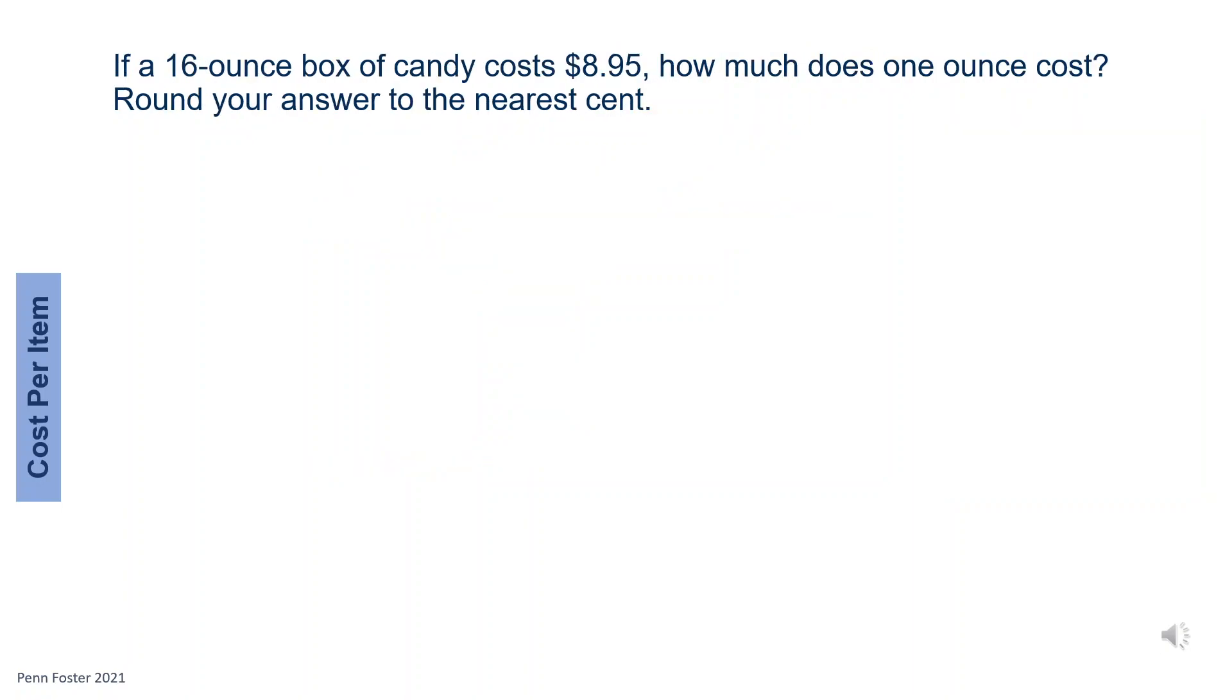If a 16-ounce box of candy costs $8.95, how much does 1 ounce cost? Round your answer to the nearest cent. In this problem, the cost of the 1 box will be divided over the box's weight in ounces to find the price of 1 ounce of candy.